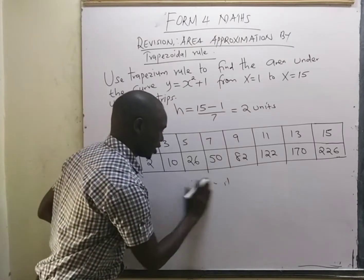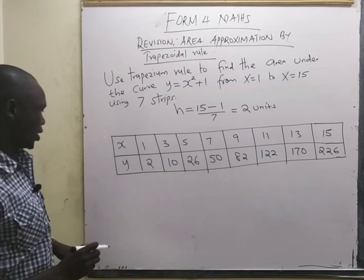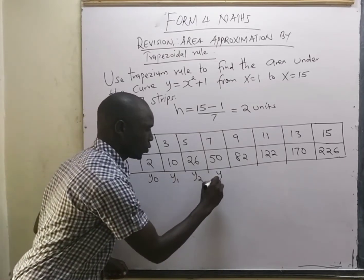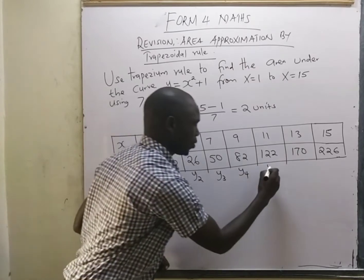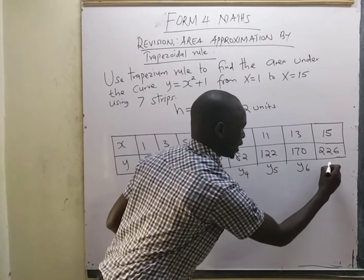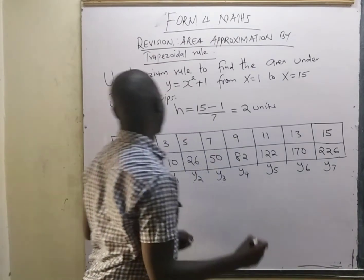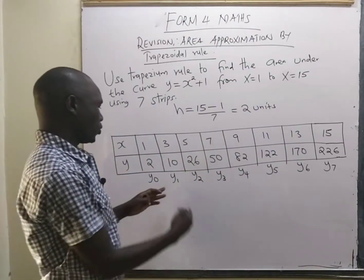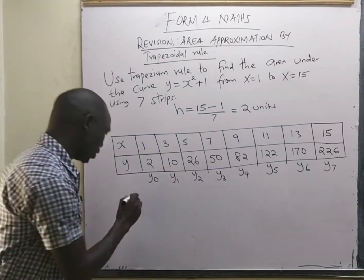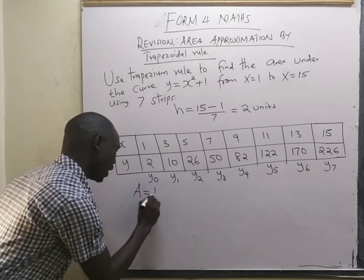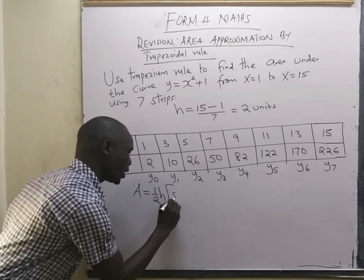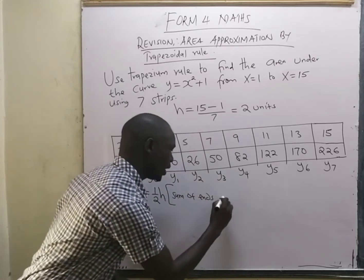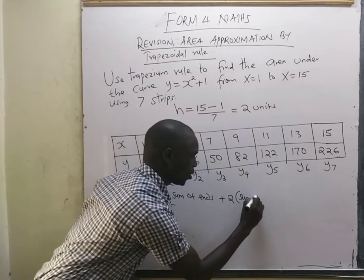Once we have those values, we label the y's: the first is y₀, then y₁, y₂, y₃, y₄, y₅, y₆, and lastly y₇, since we have 7 strips. y₀ and y₇ are the ends, and y₁ through y₆ are the middles. The trapezium rule area formula is: Area = ½ × h × (sum of ends + 2 × sum of middles).